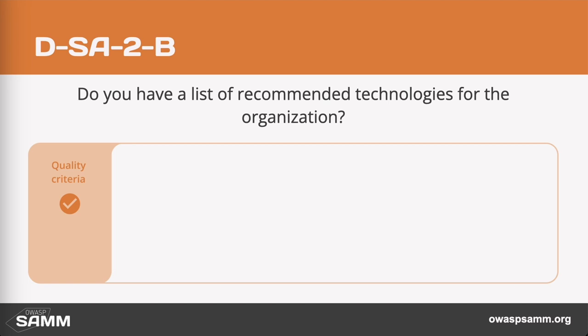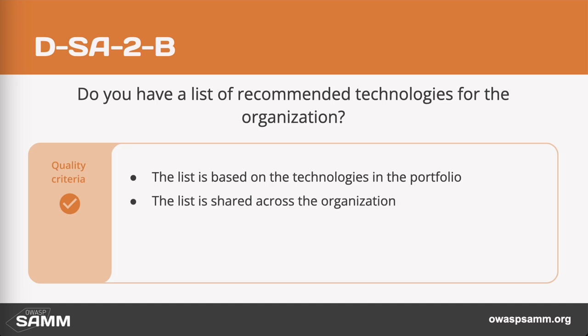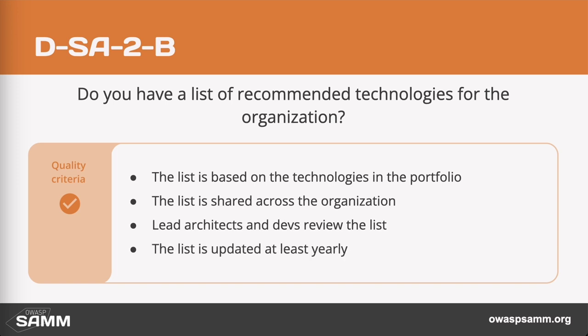At level two you start looking at the security hygiene of different possible technologies. You create a nice and naughty list — here are the things we recommend to use, and here are the things you should avoid because they are really insecure. You share this list across the organization so that everybody is aware of what they should and should not use. Lead architects and developers review and update the list at least once a year. However, there is not necessarily enforcement at this maturity level — there could still be teams using something from the naughty list.